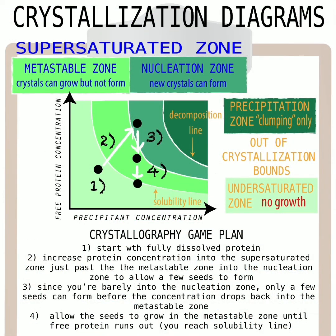You can think of crystallography as a game where we have a phase diagram called a crystallization diagram. On the y-axis, we have the free protein concentration — the protein still in solution that hasn't come out to crystallize. On the x-axis, we have the precipitant concentration — the concentration of your salt, your PEG, your organic solvent. There are different zones in this field separated by equilibrium lines, where the same amount exists in both surrounding zones going back and forth at the same rate.